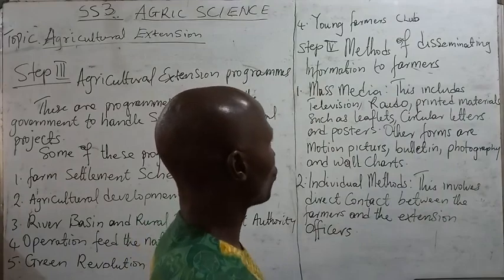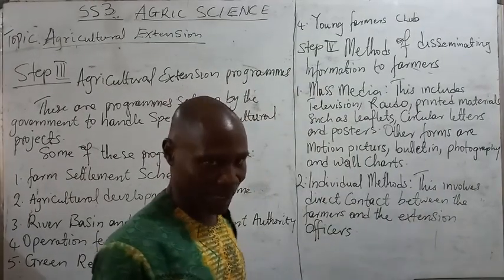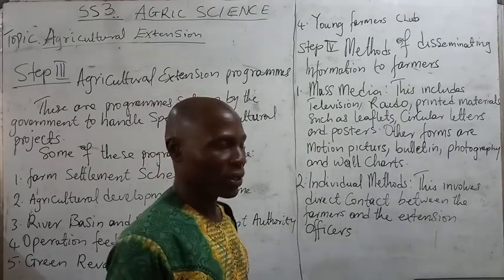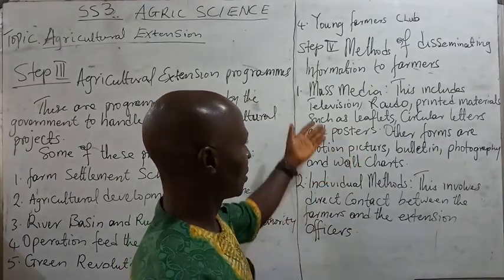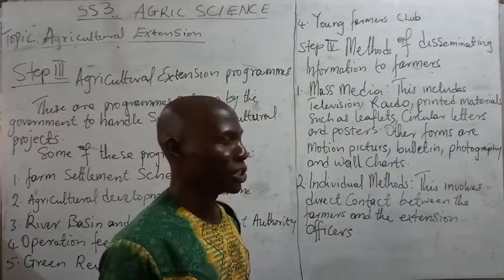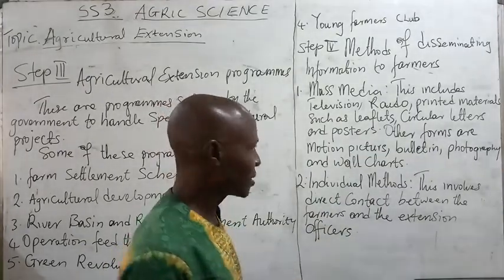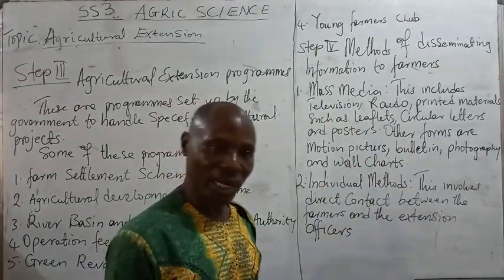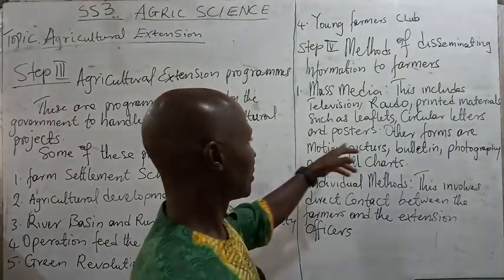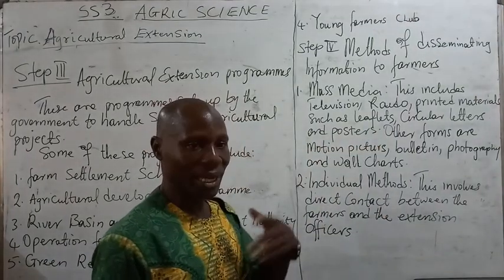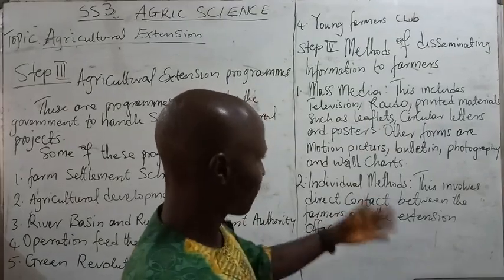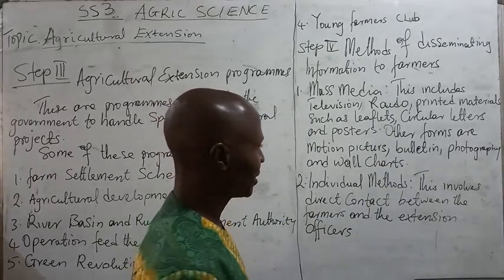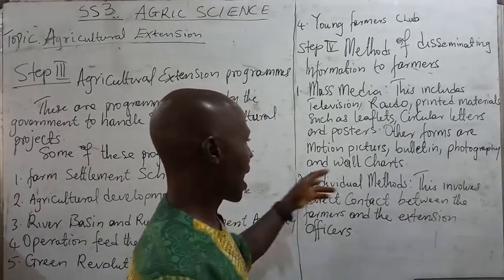We now move on to methods of disseminating information to farmers. Number one is mass media. This includes television, radio, and printed materials such as leaflets, circular letters, and posters. Other forms include motion pictures, piloting, photography, and wall charts.